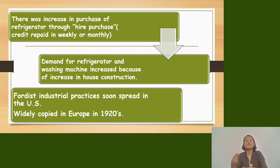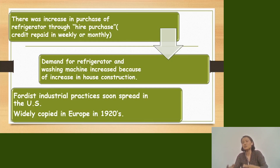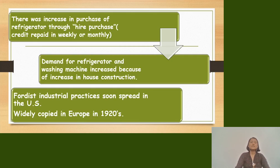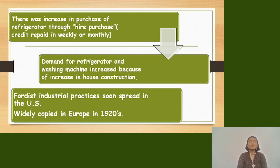Especially durable goods like refrigerators could be bought on hire purchase. Demand for refrigerators and washing machines increased, along with an increase in house construction during this period.